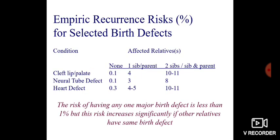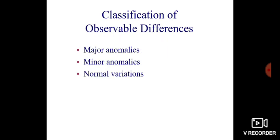The risk of having any one major birth defect is less than 1%, but this risk increases significantly if other relatives have the same birth defect.